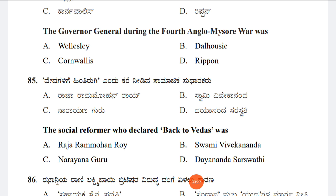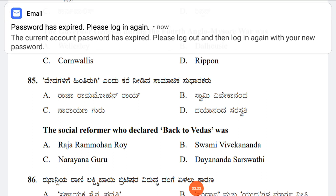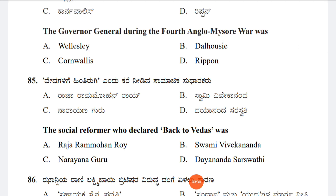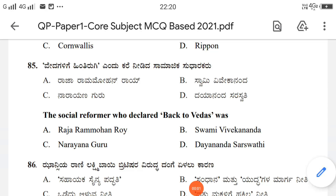Question 85: The social reformer who declared 'Back to Vedas' was Option A: Rajaram Mohan Roy, Option B: Swami Vivekananda, Option C: Narayana Guru, Option D: Dayananda Saraswati. Option D is correct — Dayananda Saraswati is the exactly correct answer.